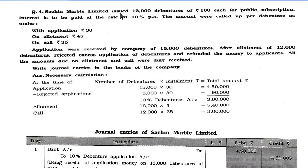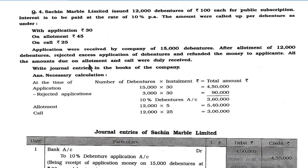Sachin Marble Ltd. issued 12,000 debentures of Rs. 100 each for public subscription. Interest is to be paid at the rate of 10% per annum. The amounts called up per debenture were: with application Rs. 30, on allotment Rs. 45, on call Rs. 25. Applications were received for 15,000 debentures. After allotment of 12,000 debentures, rejected excess applications and refunded money to applicants. All amounts due on allotment and call were duly received.